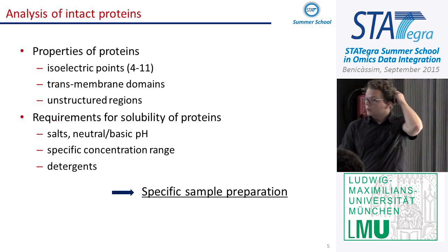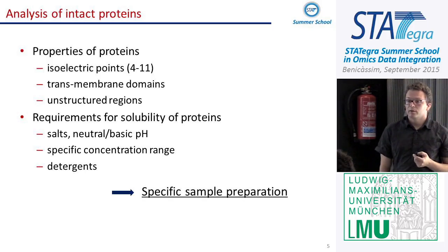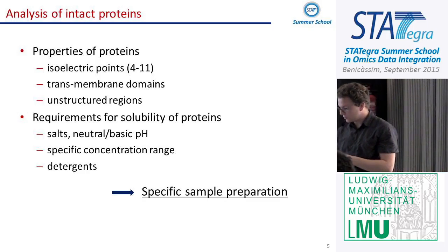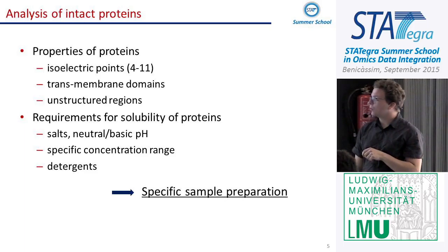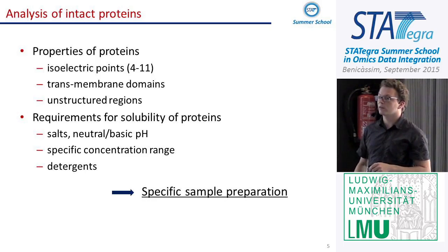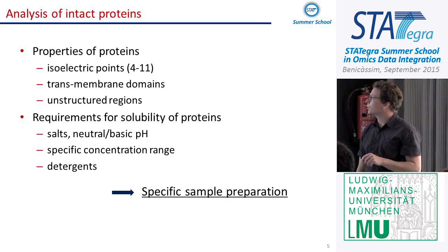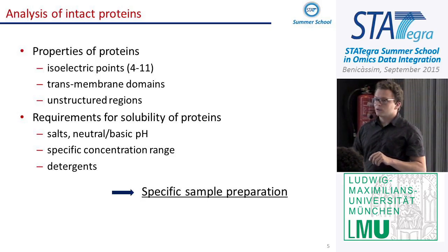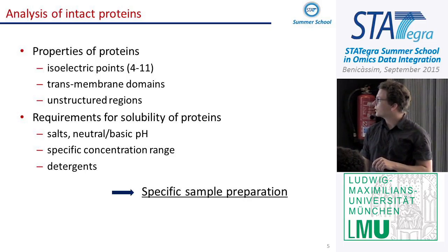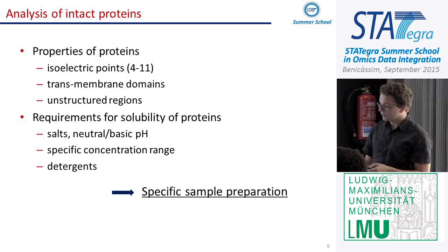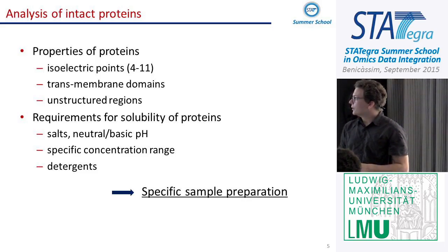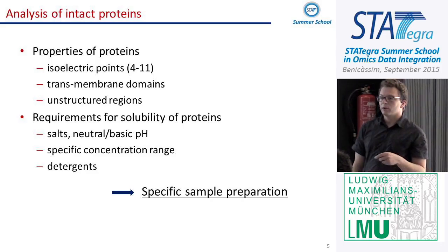Proteins are a very heterogeneous group of molecules. We have very acidic proteins with a low isoelectric point, very basic proteins, and a lot in between. This requires careful pH adjustment if you want to isolate proteins. We have proteins embedded in membranes that are very hydrophobic, proteins with unstructured regions, and so on. All of this makes it necessary to add additives when isolating proteins from cellular matrix, and often makes it difficult to detect proteins directly by mass spectrometry.